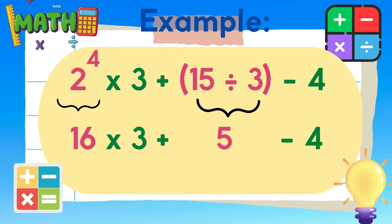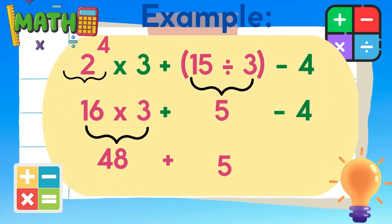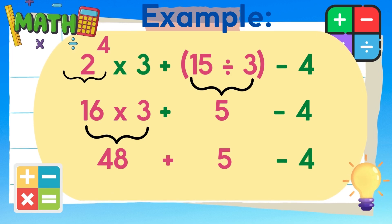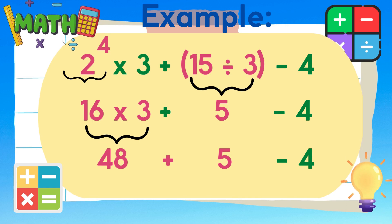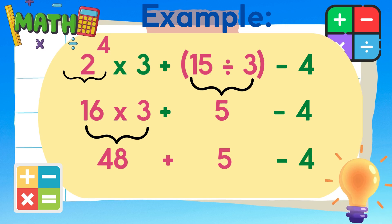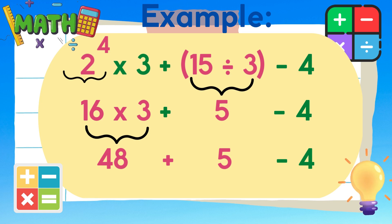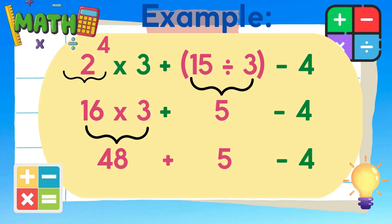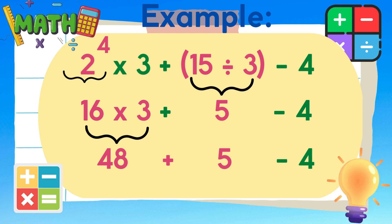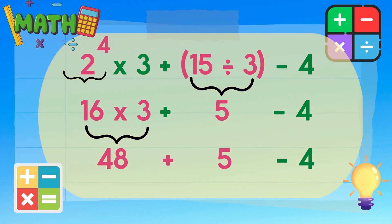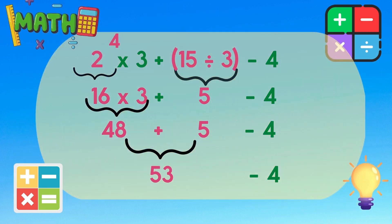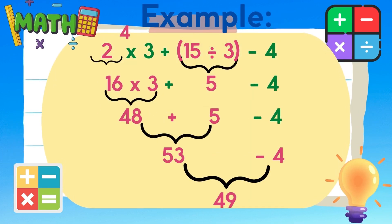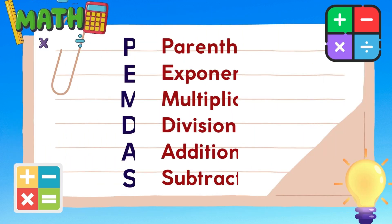Now, let's multiply: 16 times 3 is equal to 48. Now we are all done with the parenthesis, exponent, and the operations of multiplication and division. We need to perform now the operations of addition and subtraction, whichever comes first from the left. So, 48 plus 5 is equal to 53. Finally, 53 minus 4 is equal to 49. This example follows the PEMDAS rule.